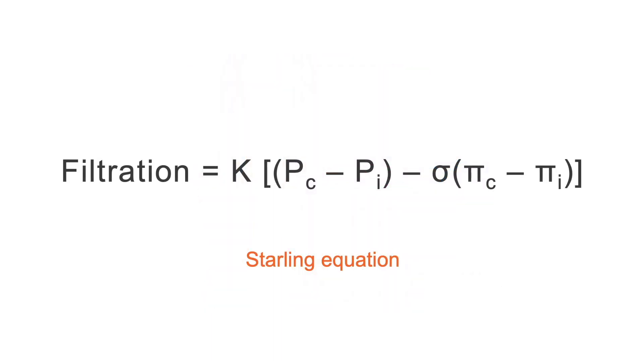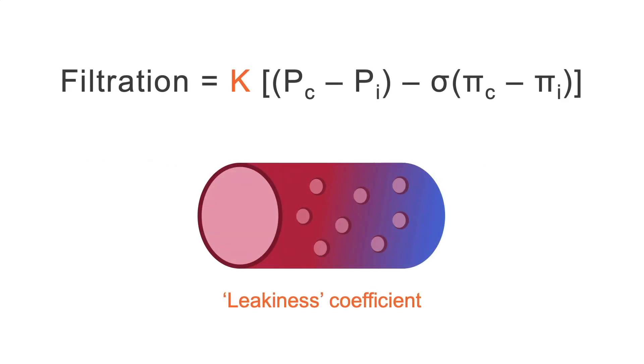As you may remember from our last lesson, the variables that guide fluid movement across the capillary are determined by the Starling equation. First, let's start with the leakiness factor.